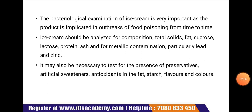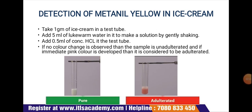Here is a simple detection method for color used in ice cream: the metanil yellow detection test. For this, take one gram of ice cream in a test tube and add 5 ml of lukewarm water to make a solution by gently shaking.